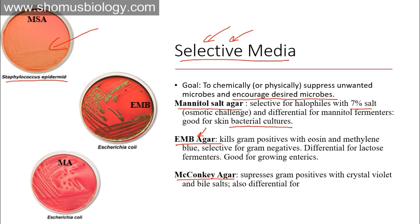EMB agar, or eosin methylene blue agar, kills gram-positive bacteria using eosin and methylene blue, and is selective for gram-negatives only. It is also differential for lactose fermenters and good for growing enterics. Enteric bacteria like Escherichia coli can easily be grown in EMB medium. For example, if you take a water sample suspected to be contaminated and streak it on EMB agar, you will find slightly greenish-tinge colonies on top of the reddish medium, indicating growth of enteric bacteria like E. coli — those which can ferment lactose.